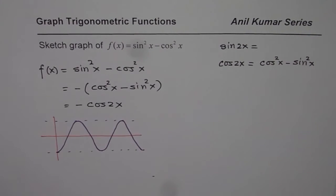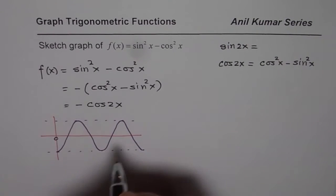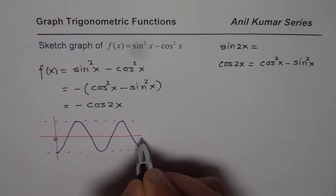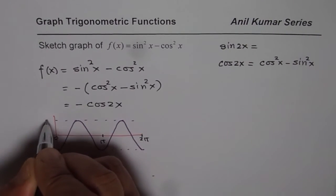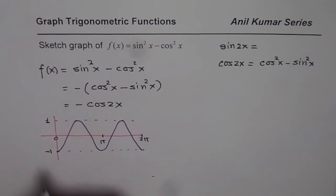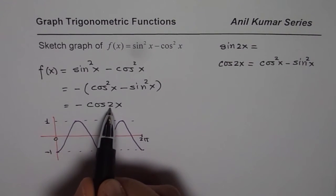So I'm just sketching the two waves within x = 2π. This is 0, 2π. This will be π for us. This will be 1. This will be -1. So -cos(2x).